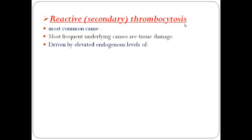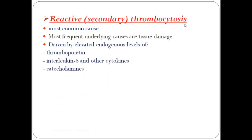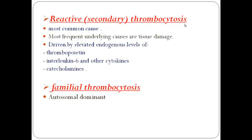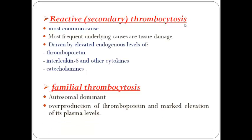Reactive thrombocytosis is driven by elevated endogenous levels of thrombopoietin, interleukin-6, cytokines, and catecholamines, which may be produced in inflammatory, infectious, or neoplastic conditions, and also in situations of stress. Familial thrombocytosis is an autosomal dominant disorder in which gain-of-function mutations in the thrombopoietin gene lead to overproduction of thrombopoietin and marked elevation of its plasma level. It is a genetically heterogeneous disorder.